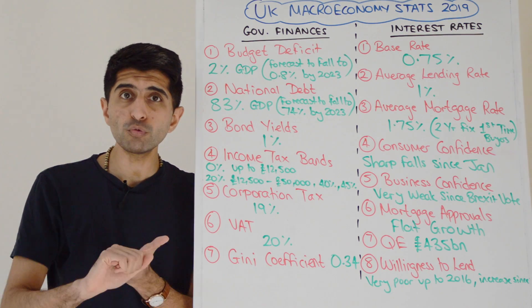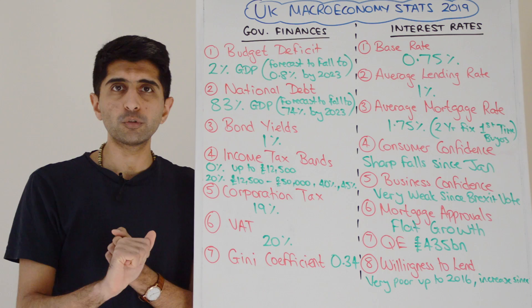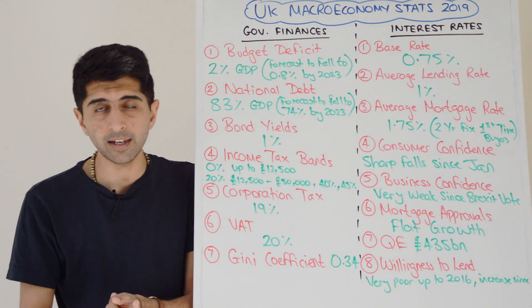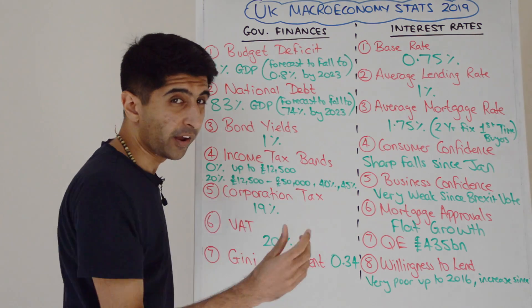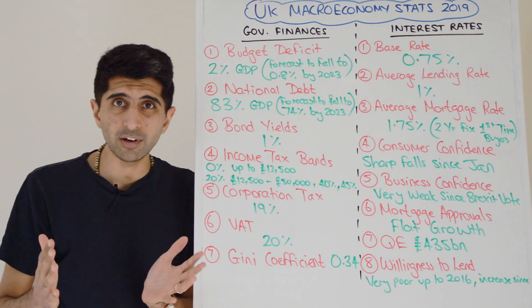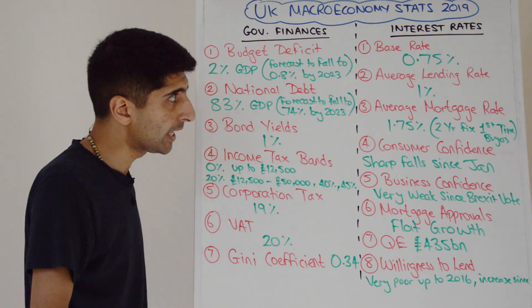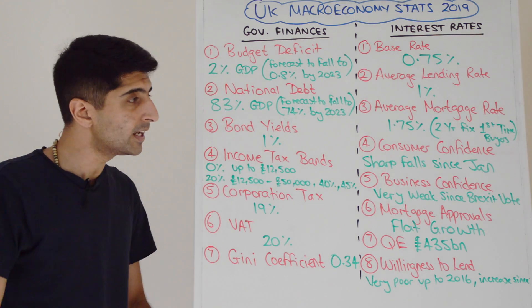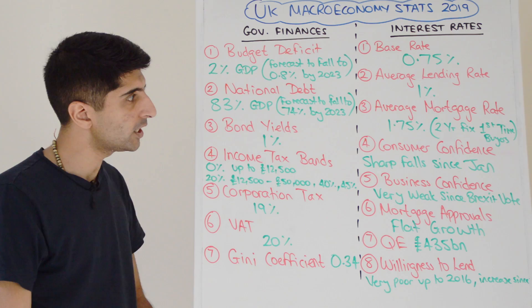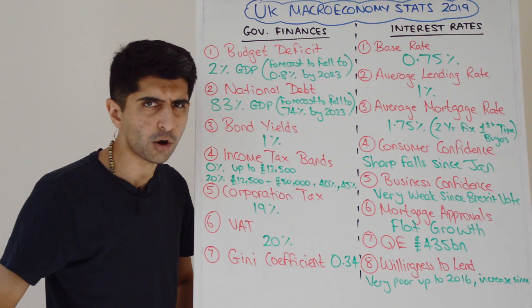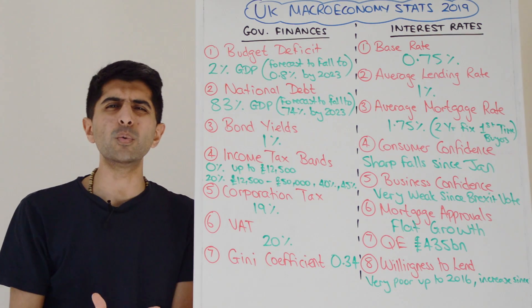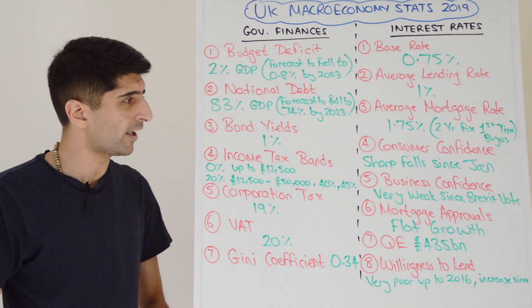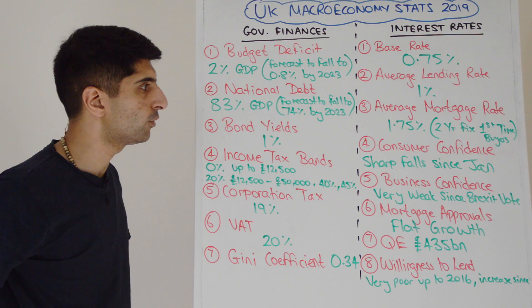The Bank of England base rate is 0.75% — very low. There have been two recent rate rises: November 2017 from 0.25% to 0.5%, and July 2018 from 0.5% to 0.75%. These low rates are feeding through — average bank lending rate is 1%, average mortgage rate for first-time buyers is 1.75%. However, good evaluation points: consumer confidence is very weak since January due to Brexit, and business confidence has been very weak since the Brexit vote.